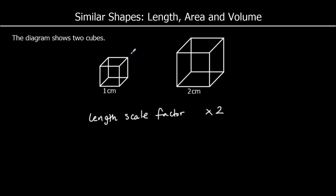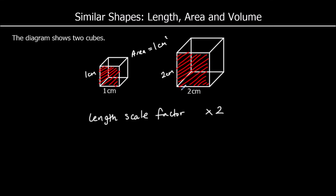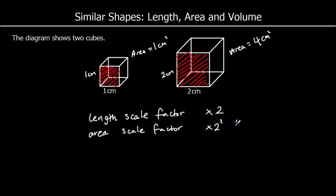How about the scale factor for area? Is it times 2? Let's look at a cross section — the square on the front of both shapes. For the 1cm cube, it's got a height of 1cm and a width of 1cm, so its area is 1 times 1, which is 1cm squared. For the 2cm cube, it's got a width of 2 and a height of 2, so it's got an area of 2 times 2, which is 4cm squared. So the area scale factor isn't times 2 — it's actually times 4, or times 2 squared.